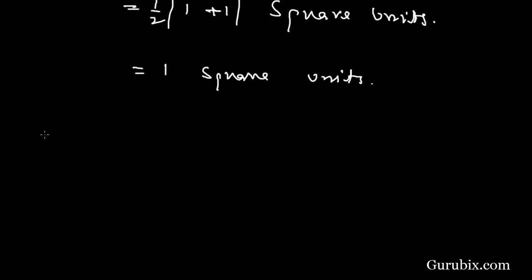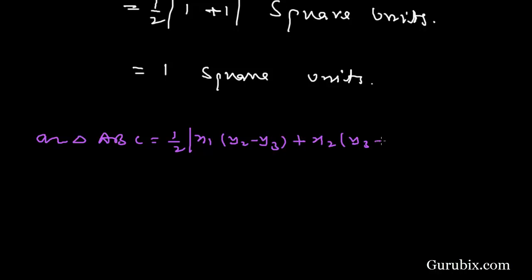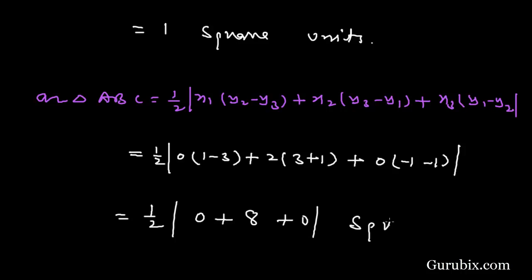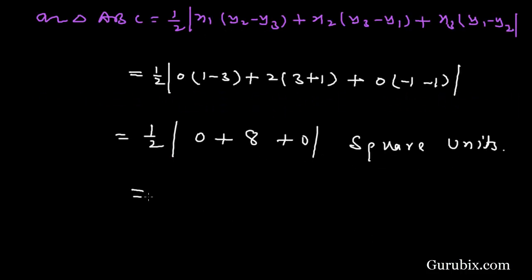Now we shall find the area of triangle ABC using the same formula: Area = (1/2)|x1(y2 - y3) + x2(y3 - y1) + x3(y1 - y2)|. Substituting x1 = 0, y1 = -1, x2 = 2, y2 = 1, x3 = 0, y3 = 3: (1/2)|0(1 - 3) + 2(3 - (-1)) + 0(-1 - 1)| = (1/2)|0 + 8 + 0| = 4 square units.